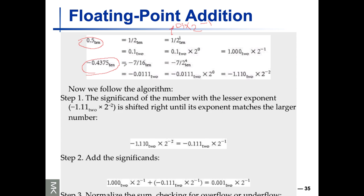The second number is a little trickier. Assume you know that 0.4375 is the fraction of 7 divided by 16. 16 is 2 to the power of 4, so it becomes minus 7 over 2 to the 4. When you shift right 4 digits — 7 in binary is 111 — it becomes minus 0.0111. Normalizing it gives minus 1.110, multiplied by 2 to the minus 2. So now we have these two values to add.